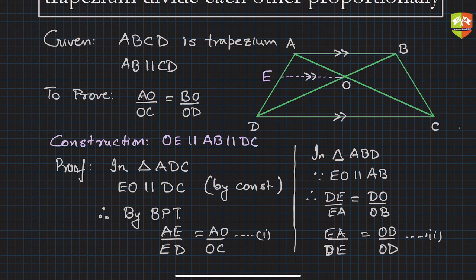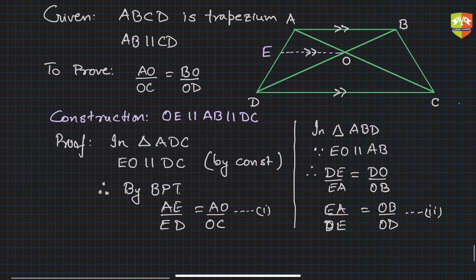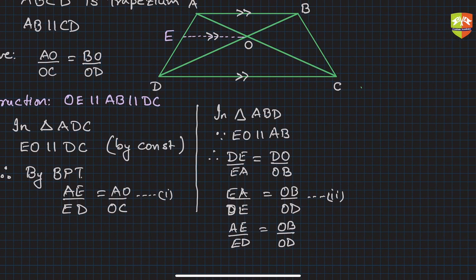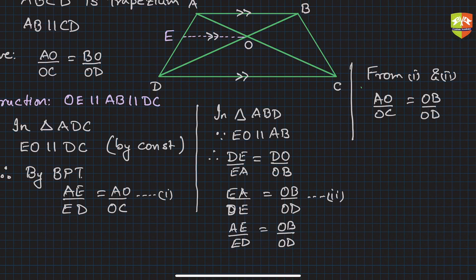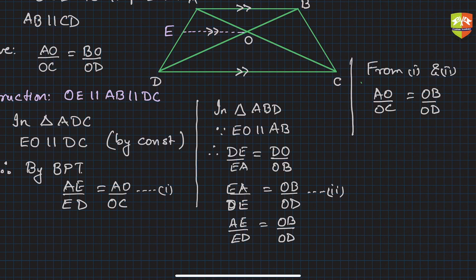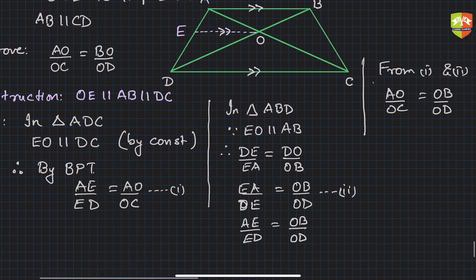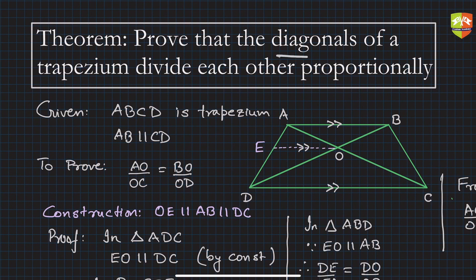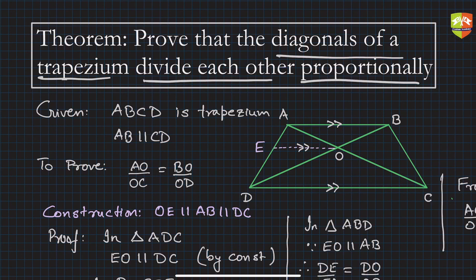If you look carefully, the left-hand sides of equations one and two are the same — only the order of points differs. So we can rearrange and say AE by ED equals OB by OD. Therefore from one and two, AO by OC equals OB by OD, which is what we needed to prove. So the diagonals of a trapezium divide each other proportionally. The converse is also true, and we'll see that next.